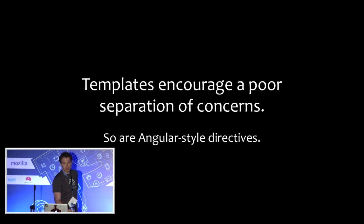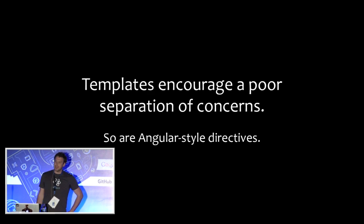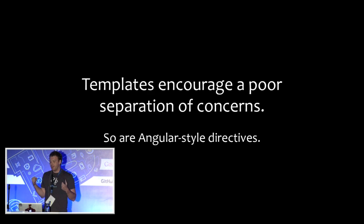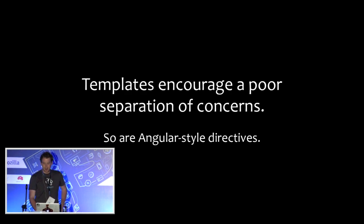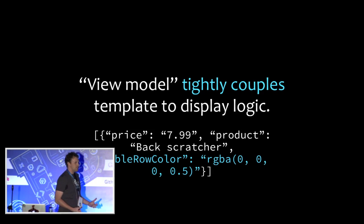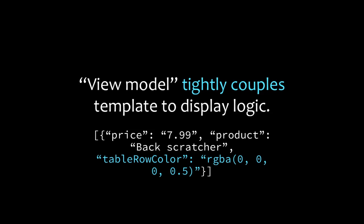I think that templates encourage a really poor separation of concerns — and it's not just templates. It's anything that tries to mark up an HTML document and make it interactive. AngularJS-style directives also fall into this category. When you create a template with display logic in one file and markup in another, that seems like a reasonable separation of concerns. But it's actually a misunderstanding, because there is an implicit coupling between that display logic and the template. The template always needs to read some data from JavaScript.